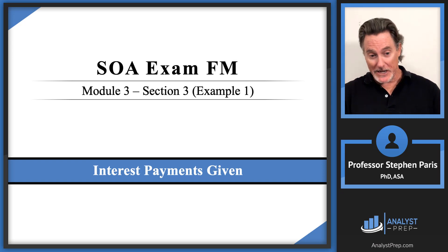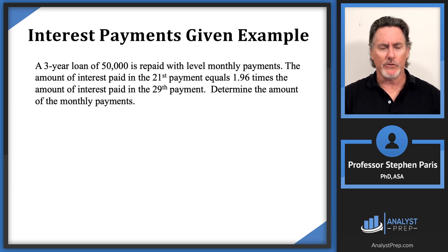Hi, in this video we're going to do an example where we're looking at interest payments at certain times that are given. Let's jump right into the example. I've got a three-year loan of $50,000 being repaid with level monthly payments. The amount of interest paid in the 21st payment is 1.96 times the amount of interest paid in the 29th payment. The question is to determine the amount of the monthly payments.